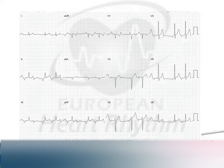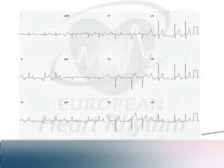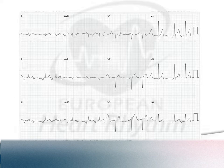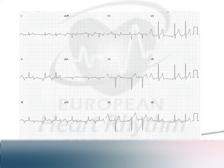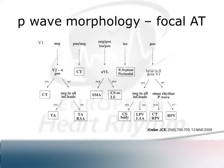When you look at an ECG of someone with focal atrial tachycardia, it's obvious it's atrial tachycardia when you have more P waves than QRS complexes — it's virtually impossible for this to be anything else. A very discrete P wave in a normal heart probably indicates a focal mechanism. The morphology of the P wave can help identify where the focus is; there are several published algorithms. If P waves are positive in leads I and AVL, it's likely from the right side; negative in I and AVL suggests the left side. Positive in V1 usually means it's coming from the back of the heart, often the left atrium.